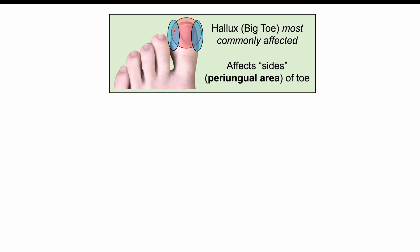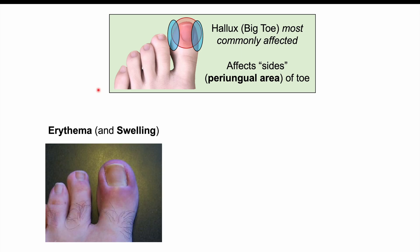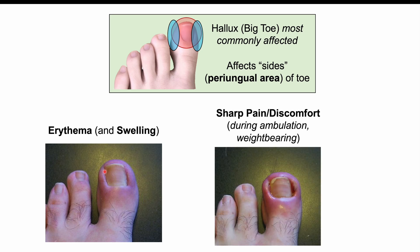Findings include erythema — redness on the sides of the toe — and swelling or edema. If one side of the toe, especially the big toe, is red and swollen, that could be a sign of an ingrown toenail. Often the patient will describe a sharp focal pain on the side of the toe, especially when ambulating, walking, or weight bearing.